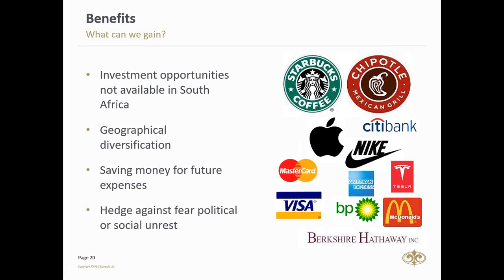It's about getting exposure to sectors not available in South Africa — the technology sector, the biotechnology sector, banks, and even big names like Starbucks and McDonald's. My main objective for investing offshore is geographic diversification, but also goal-based — saving for future expenses like children's education at foreign universities, extensive travel, or retiring offshore. For those who fear political or social unrest, I like to have a plan B in place, especially for my children's financial future.